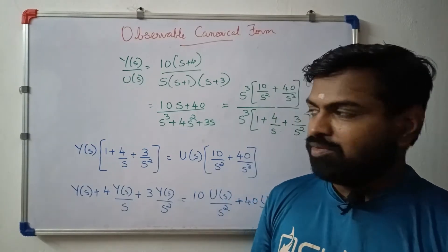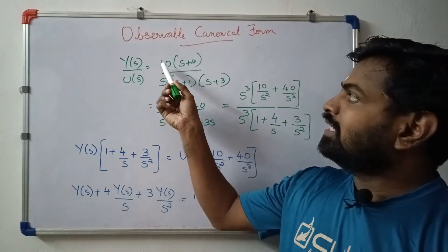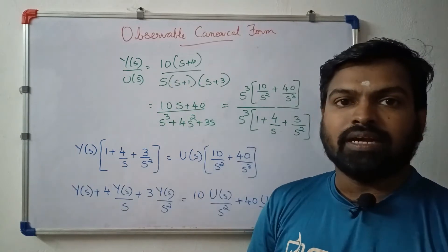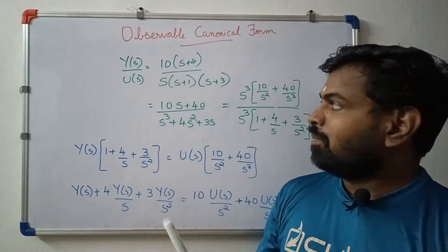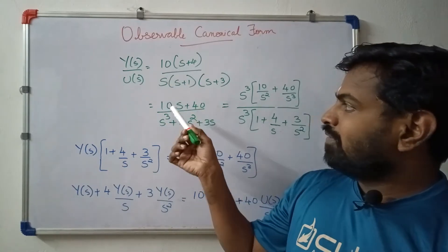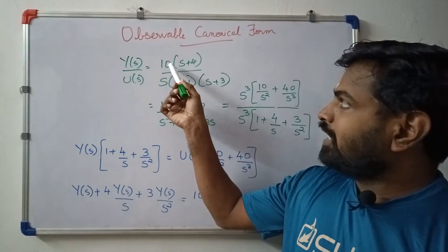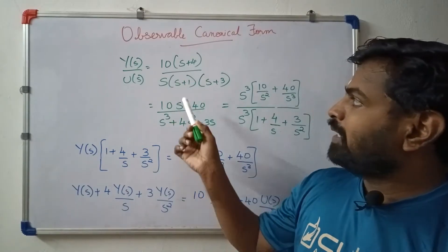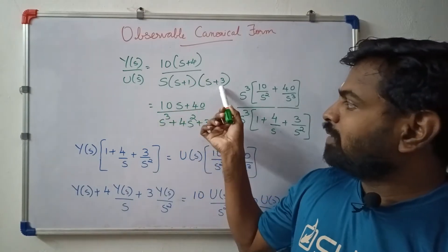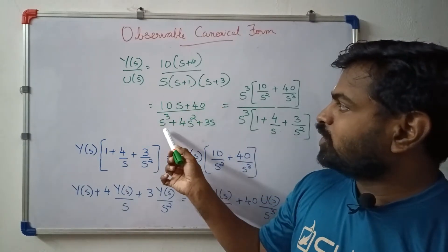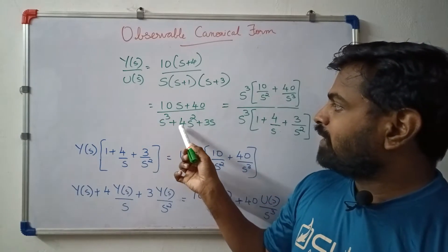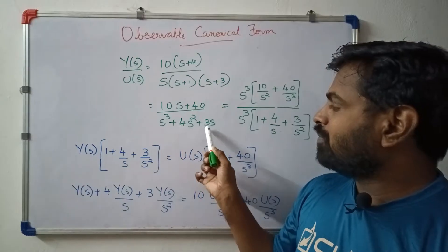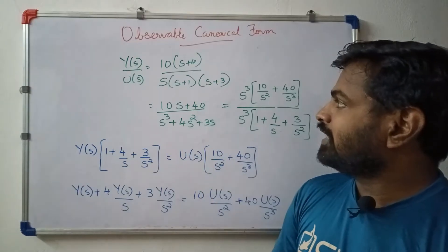First, we expand. Here is 10 times (s plus 4) over the denominator s cubed plus 4s squared plus 3s.